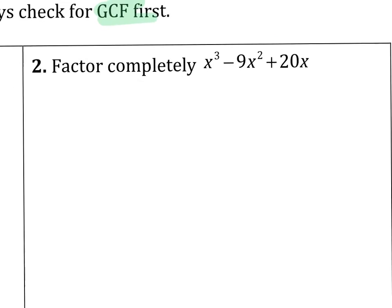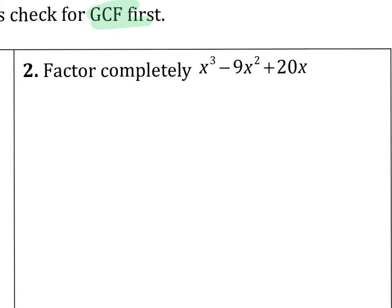Alright, let's look at problem number 2. Factor this completely. And I'll give you a hint. It's usually when it says completely, that implies that there's probably going to be a GCF situation coming up. So notice that each one of these has at least one x that I can pull out.